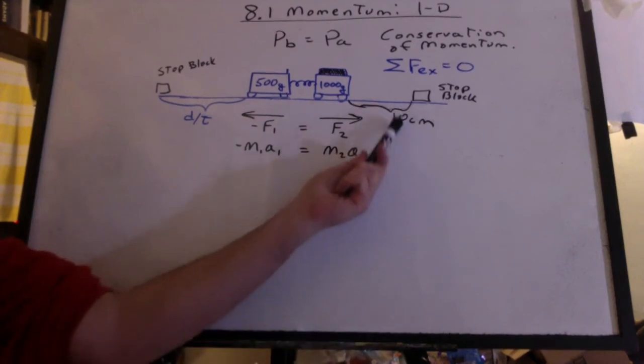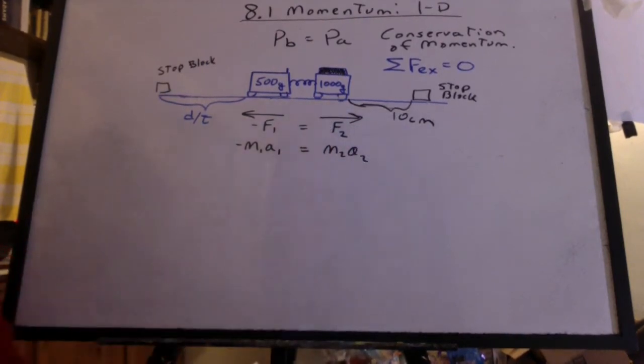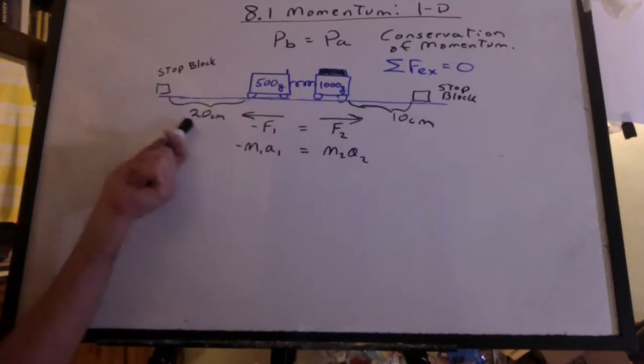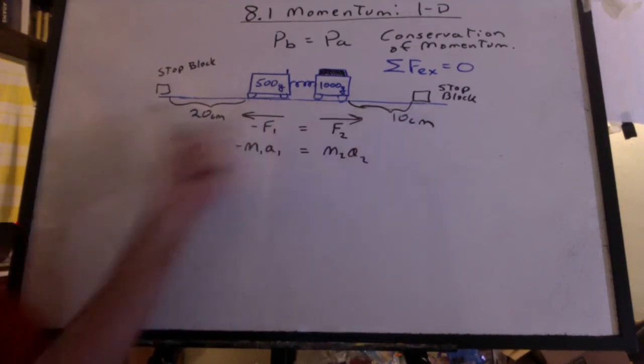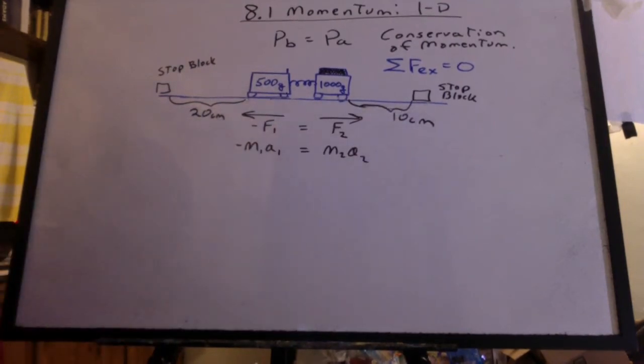So if we put this block 10 centimeters from this cart, we'd put this stop block 20 centimeters from the end of that cart. And then when I trigger it, they hit at the same time. And you can see that in the video.